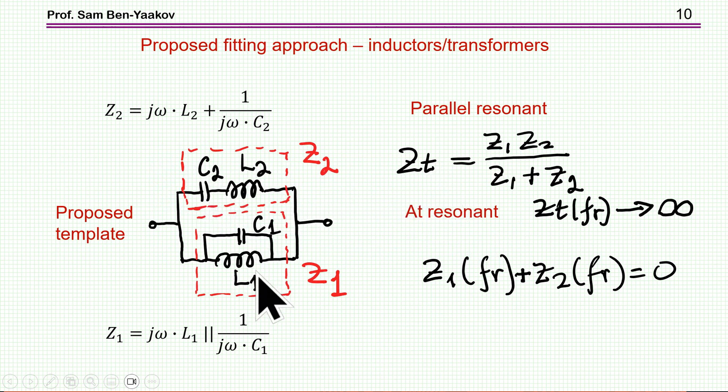And therefore, the impedance, which is these two in parallel, can be expressed as Z1 times Z2 over Z1 plus Z2, two units in parallel, two branches in parallel.